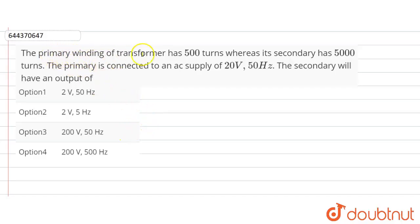Hello friends, the question is given here: the primary winding of a transformer has 500 turns, whereas the secondary winding has 5000 turns. The primary is connected to an AC supply of 20 volt, 50 hertz. The secondary will have the output of?